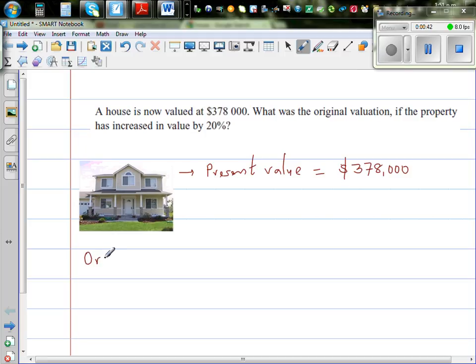So can we write this as a form of an equation? Well, I can say there was an original price, so this is original price plus 20% of the original price is equal to the present value.